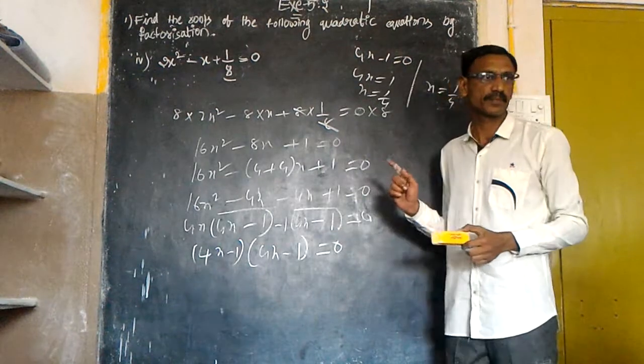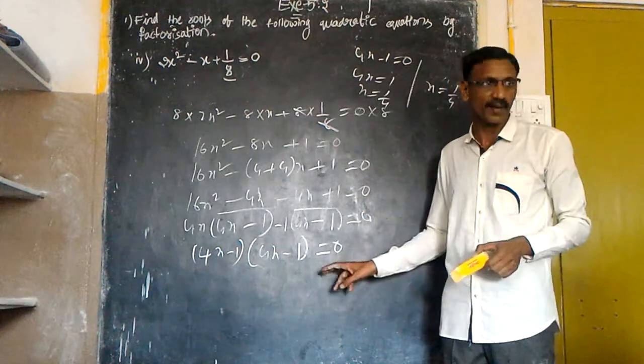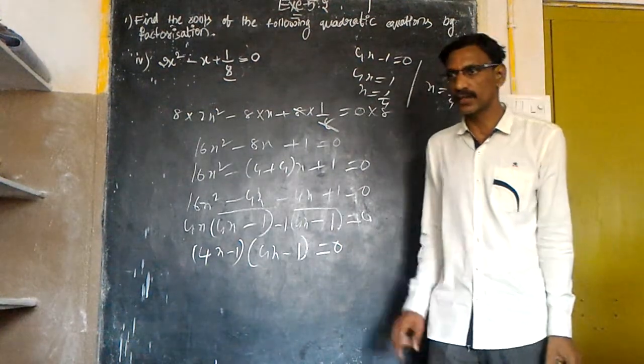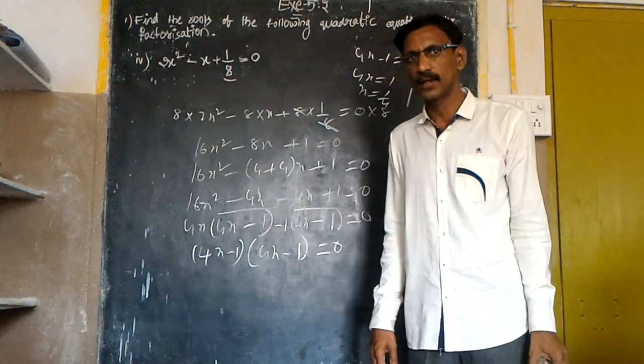Here we observe this one, two zeros are equal. Here two zeros are equal.